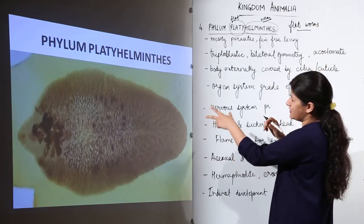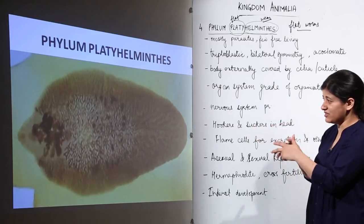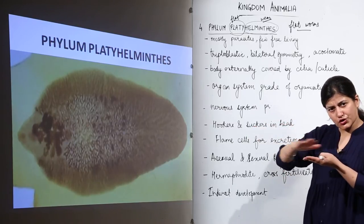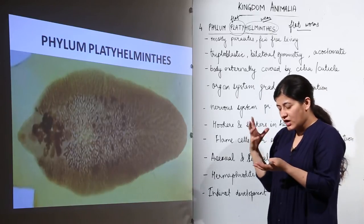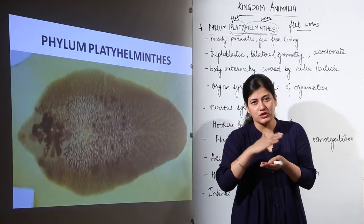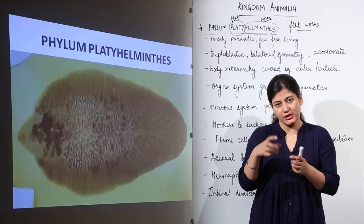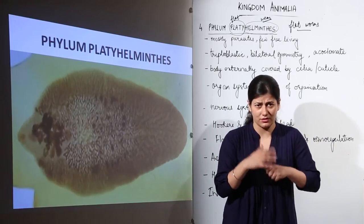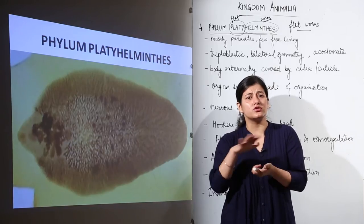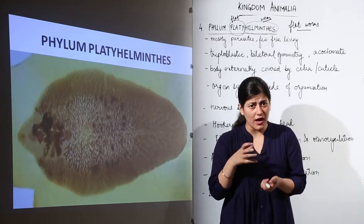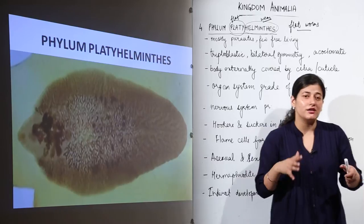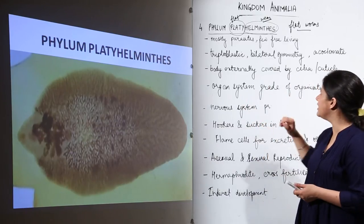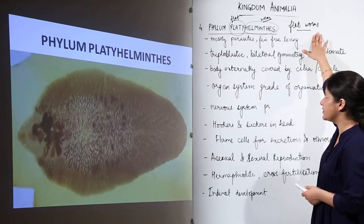This creepy-looking organism is a liver fluke, which is a flatworm. Dorsal-ventrally flattened means it would feel like a paper sheet. If you took a paper sheet and cut it into the shape of an organism, that would be a dorsal-ventrally flattened organism. Such animals are present in our world and they are members of phylum Platyhelminthes — they are flatworms.